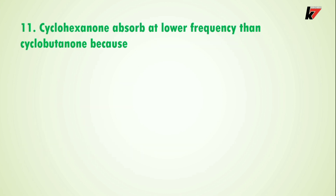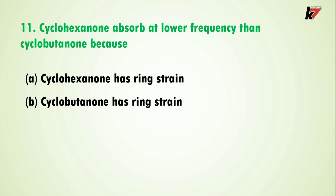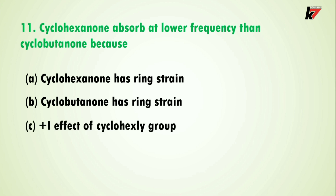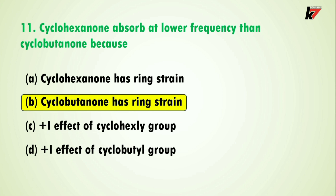Question 11: cyclohexanone absorbs at a lower frequency than cyclobutanone because — option A is cyclohexanone has ring strain, option B is cyclobutanone has ring strain, option C is plus I effect of cyclohexyl group, option D is plus I effect of cyclobutyl group. The correct answer is option B: cyclobutanone has ring strain. As ring strain increases, stretching frequency also increases. Cyclohexanone has no ring strain, which is why it absorbs at a lower frequency than cyclobutanone.